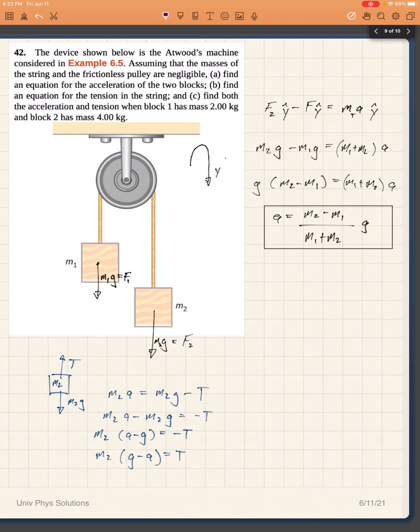So let me write it down again. I have that the tension is equal to M2 G minus A, so tension will be M2 times G minus A which is this whole quantity.